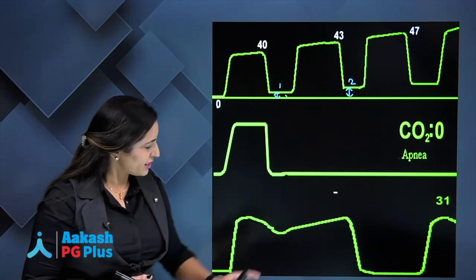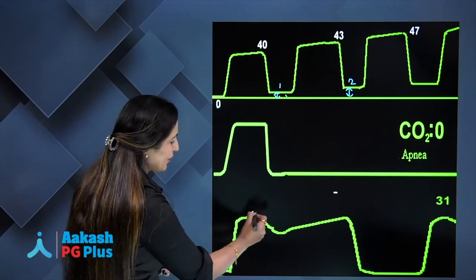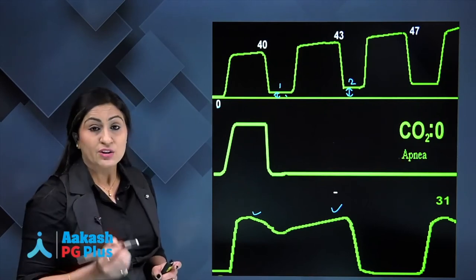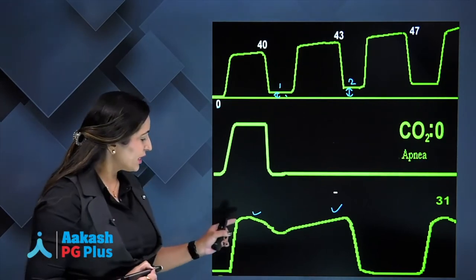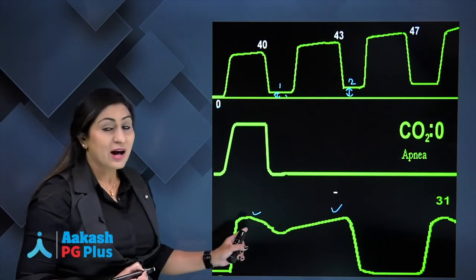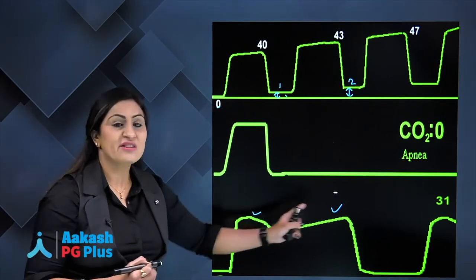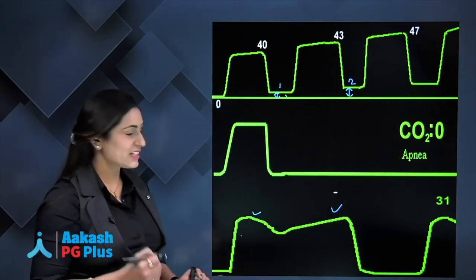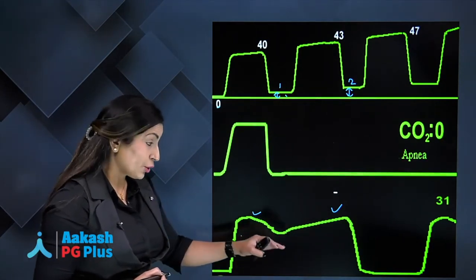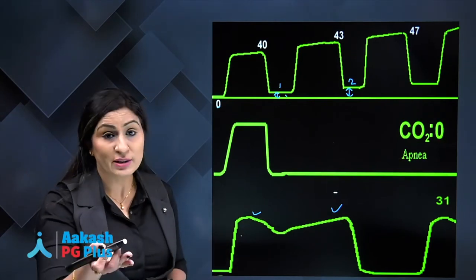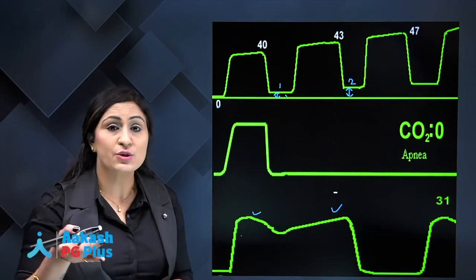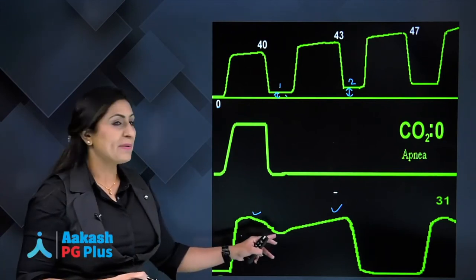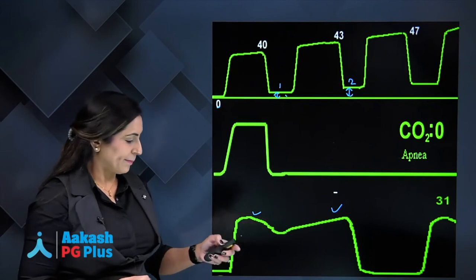When you see a biphasic capnogram — a graph with two peaks — this shows that the alveoli of both lungs are expiring at different rates. This could be the left lung and the right lung expiring separately, suggesting an endobronchial intubation where the tube has been pushed too far inside. You need to pull back the tube.